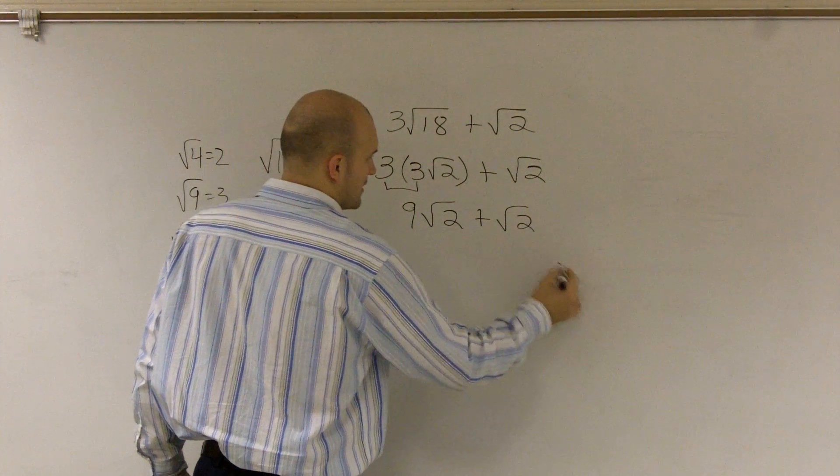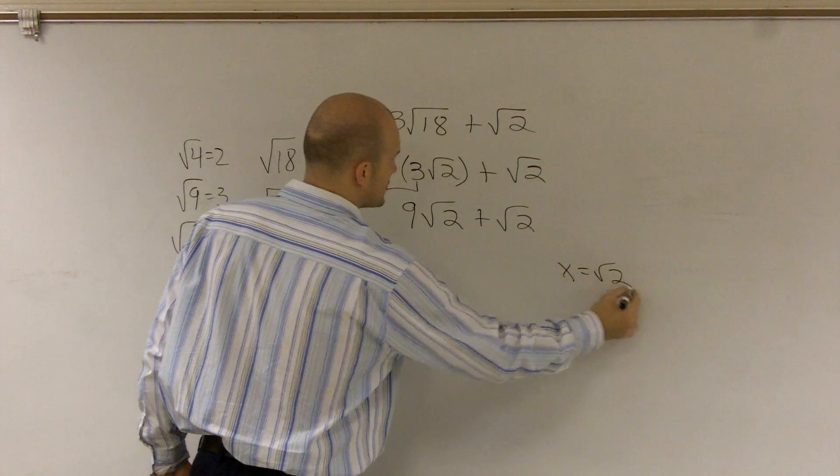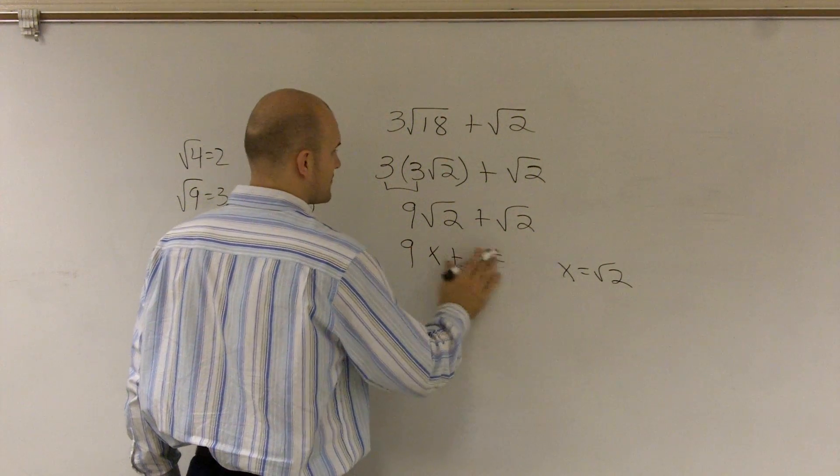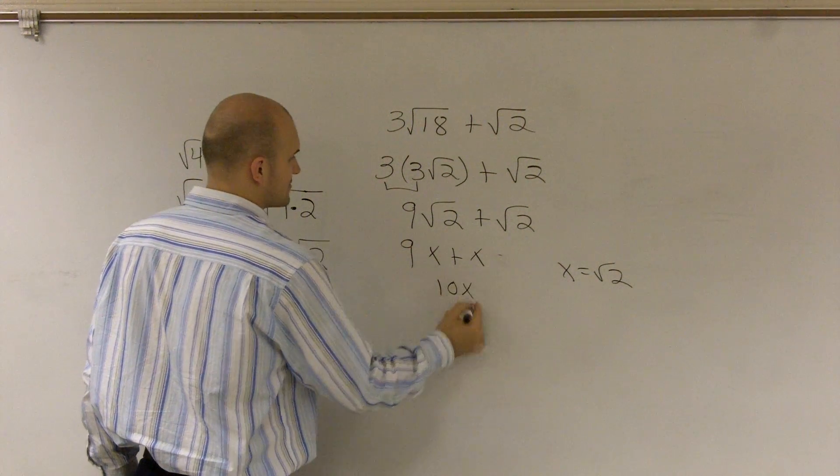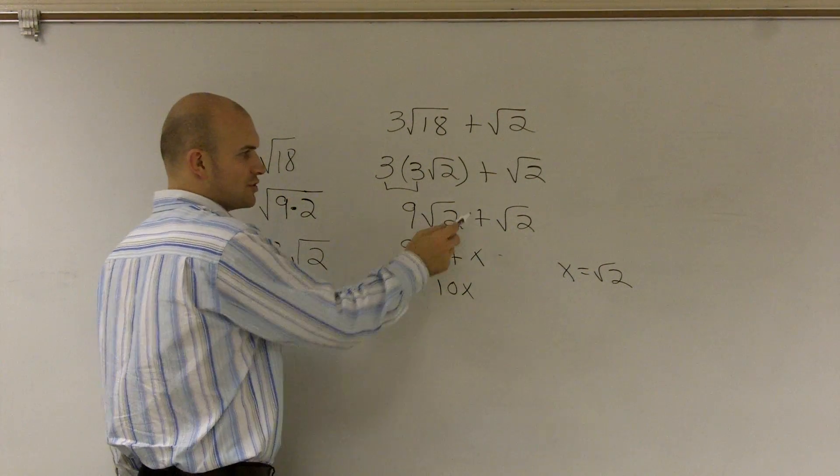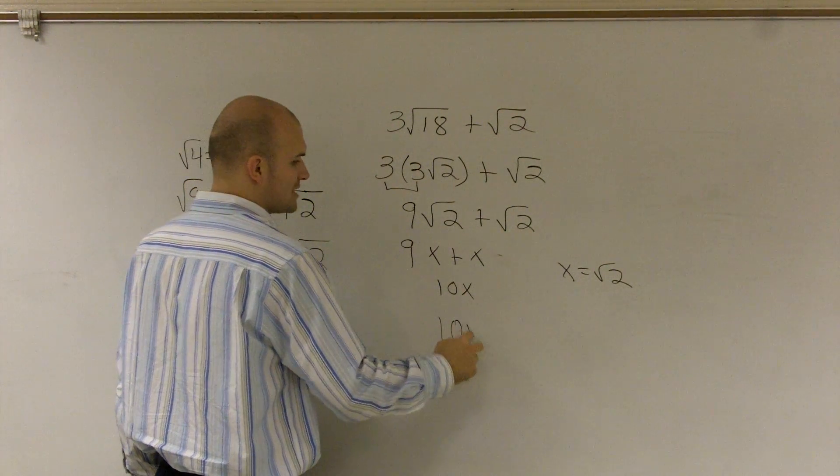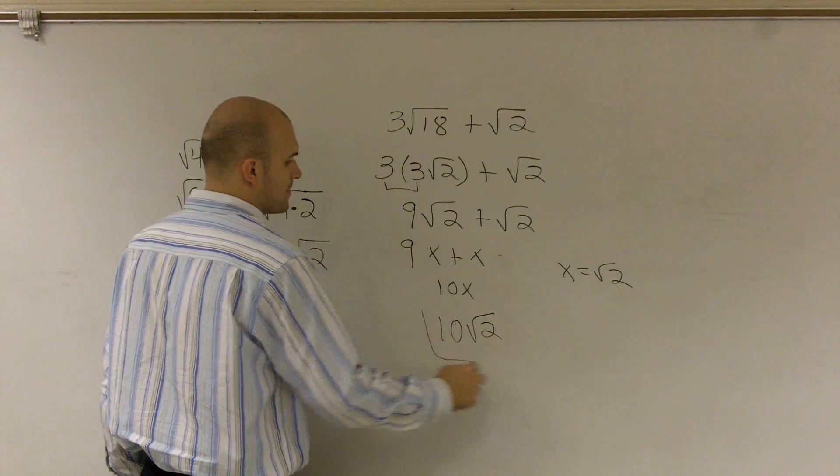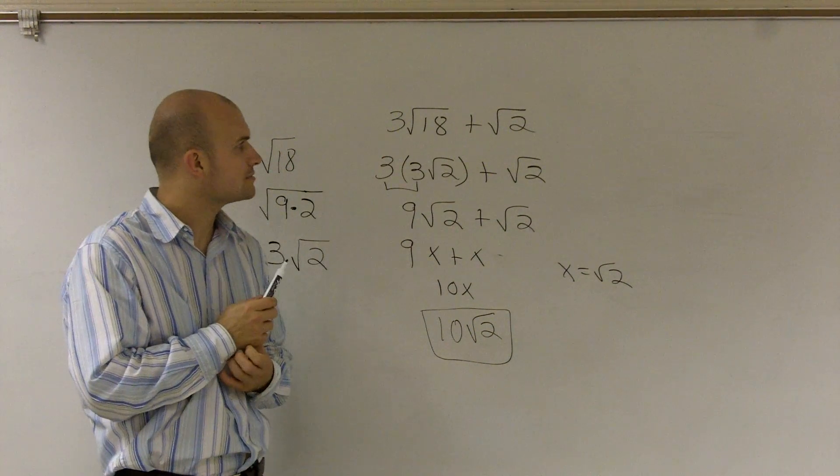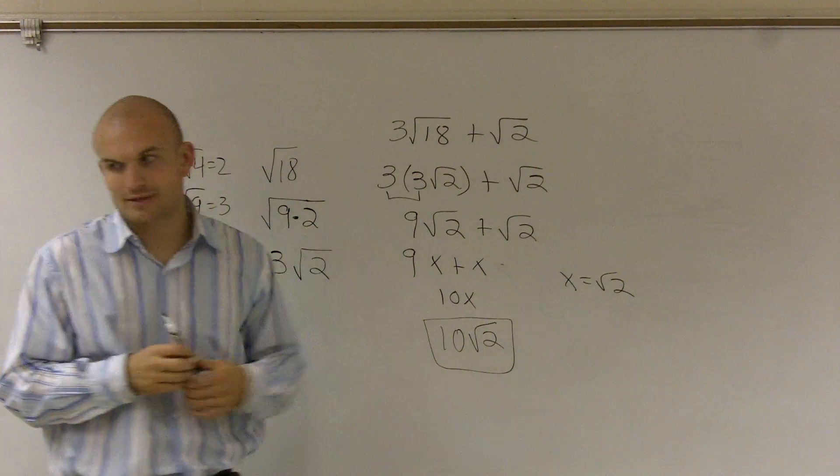If I was going to say x equals square root of 2, you would say 9x plus x equals 10x. And it's the same thing with the square root of 2. 9 times square root of 2 plus square root of 2 is going to equal 10 square root of 2. And that's how you simplify two radicals.